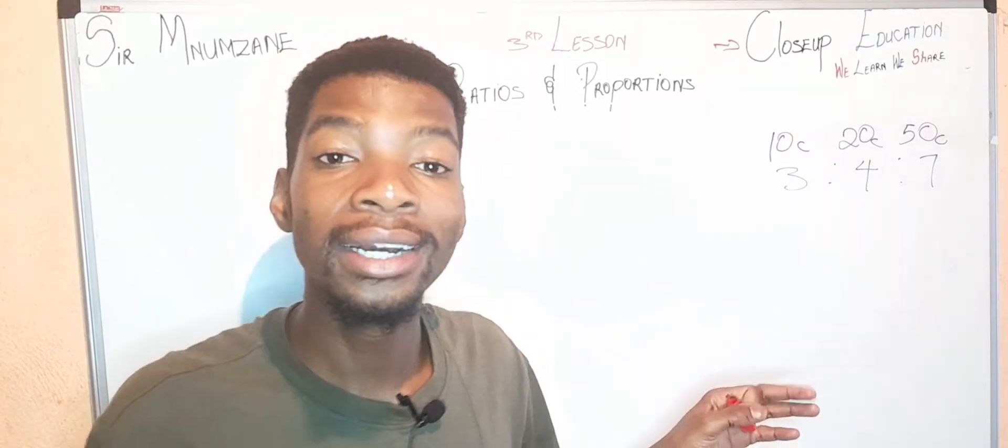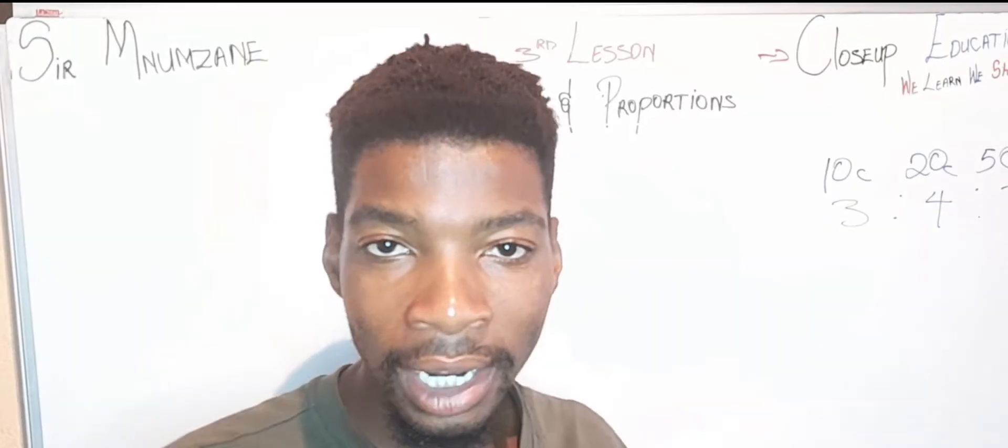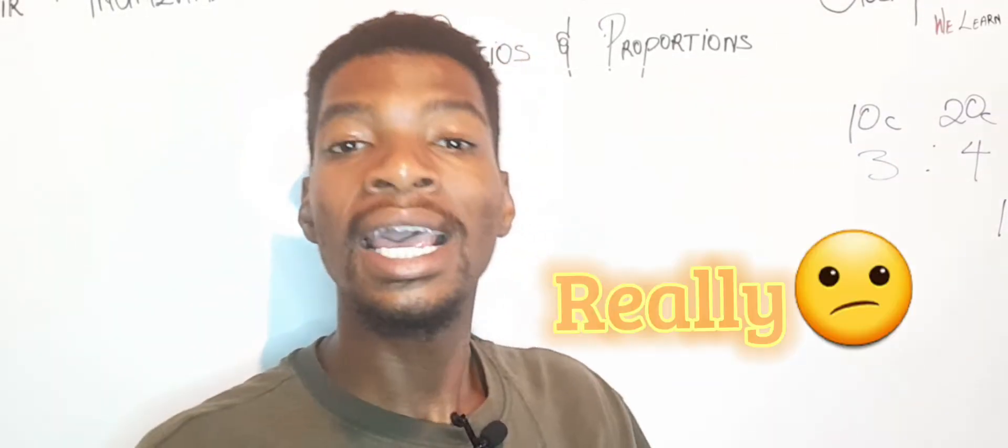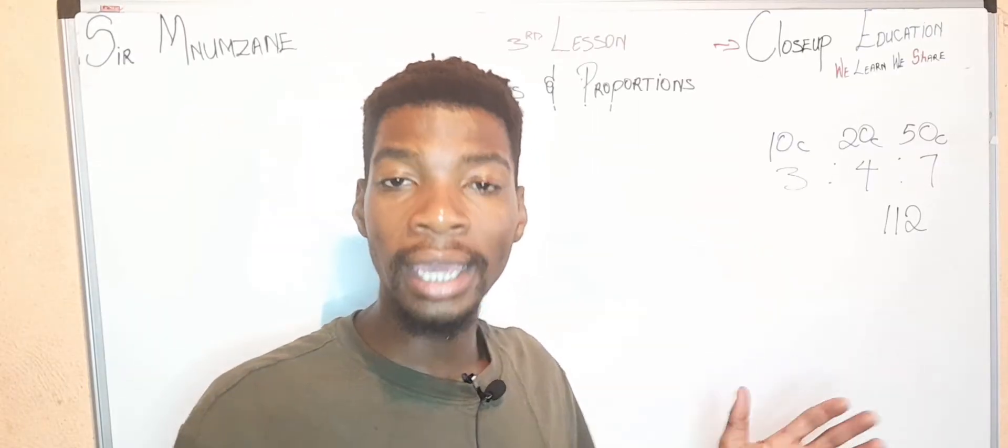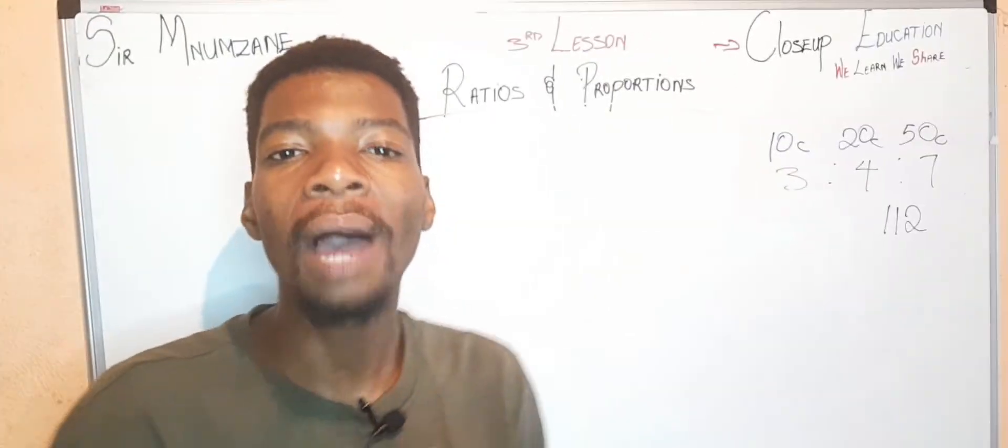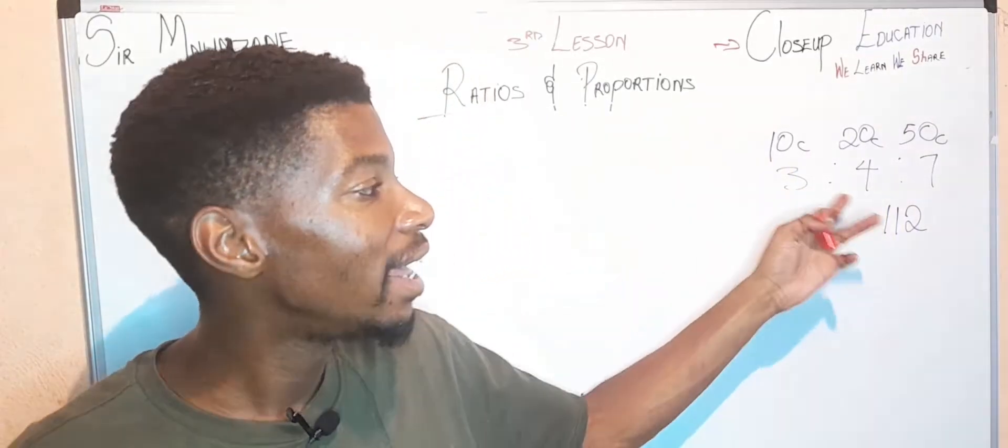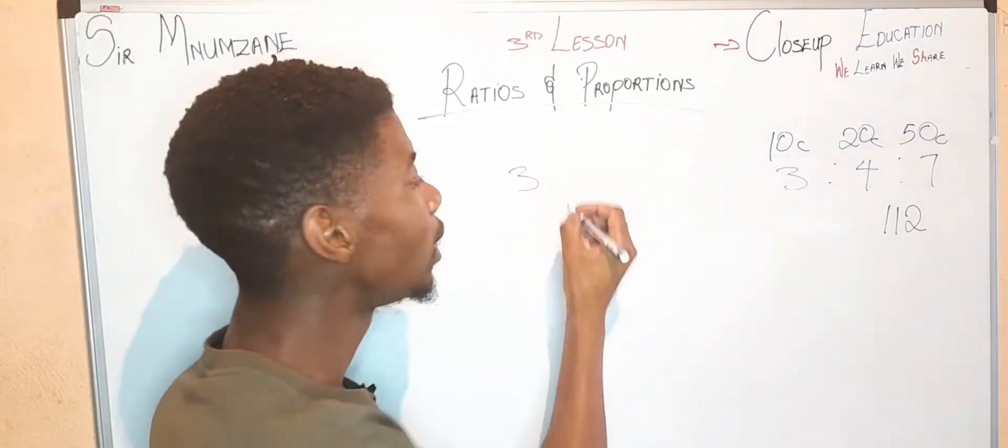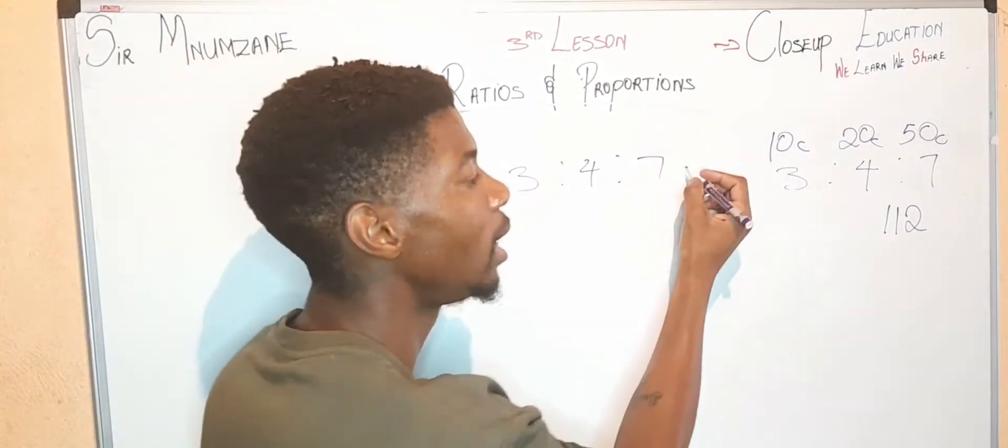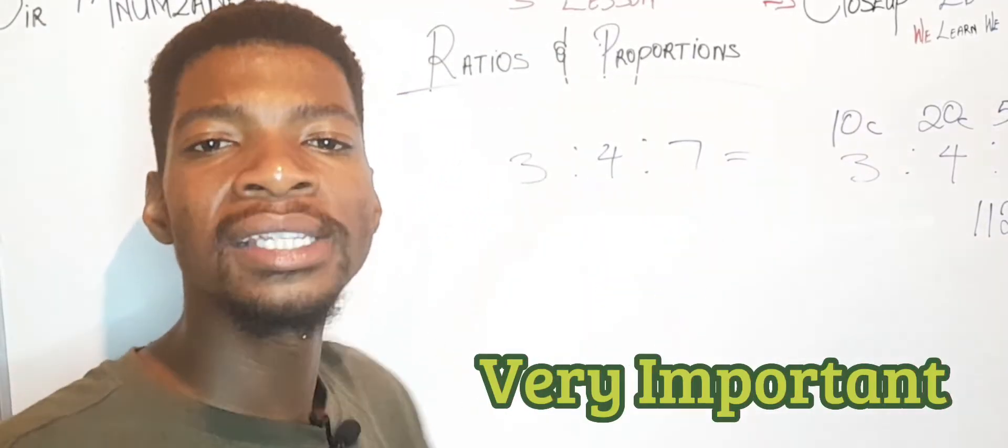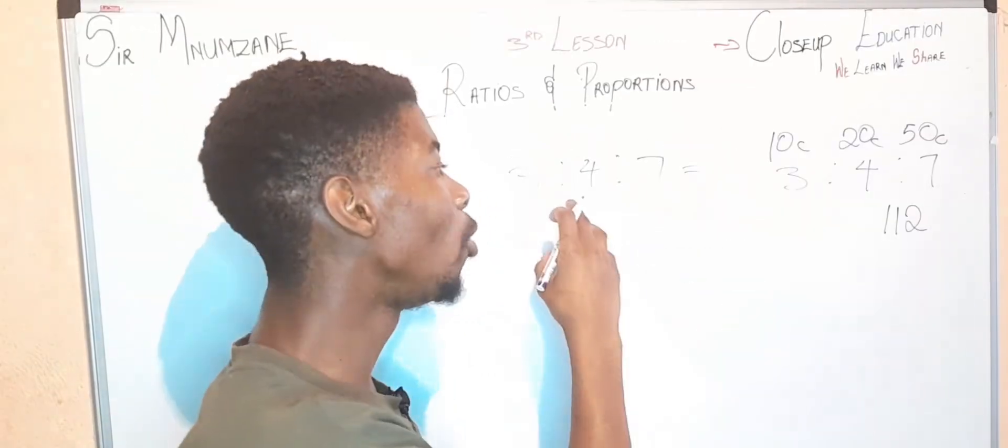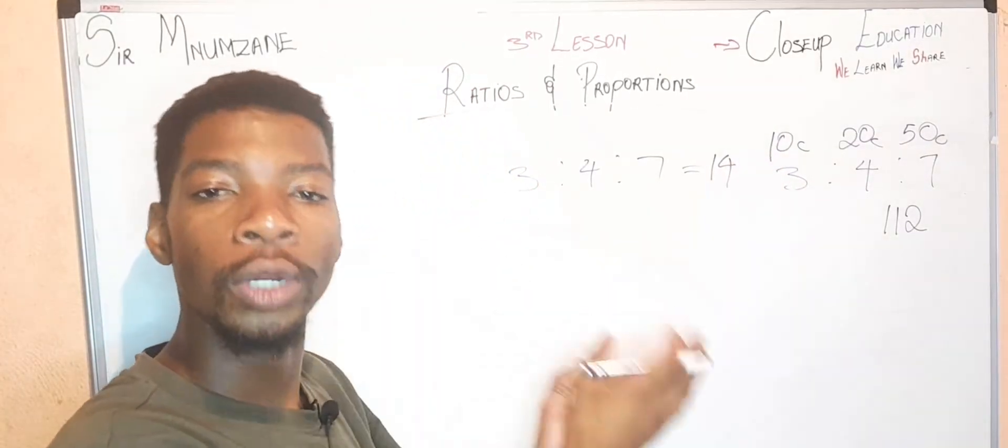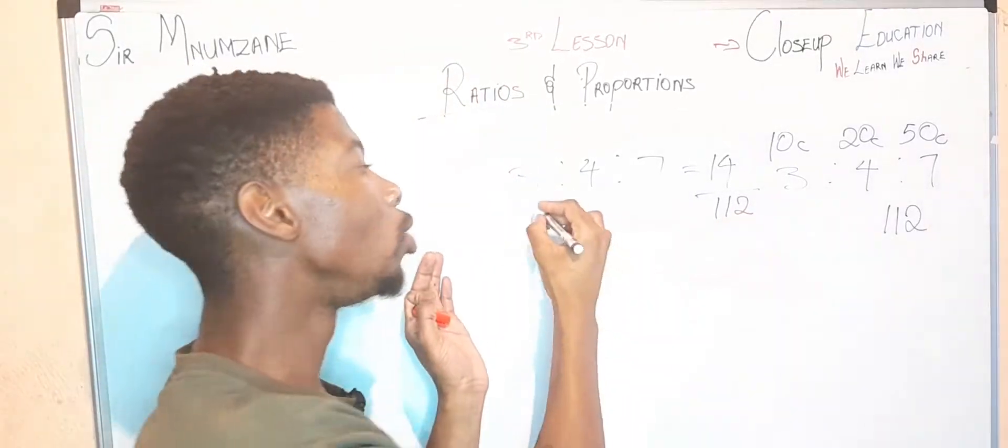Question four: Let's say you've been saving 10 cents, 20 cents, and 50 cents. The ratio of the cents you've been saving looks like 3:4:7. We are also given a total of coins that are 112. So the coins total 112. If you are given this ratio, what do you do?